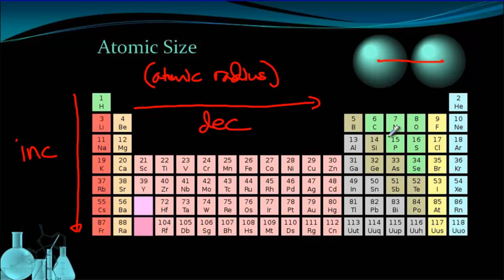Because as we move across, you get a stronger nuclear charge, which pulls in all the electrons just a little bit closer. And so the overall size goes down.